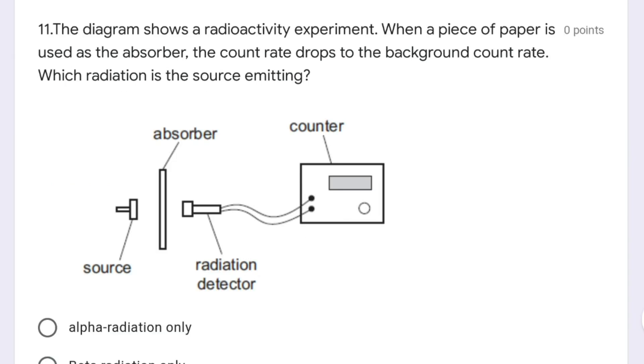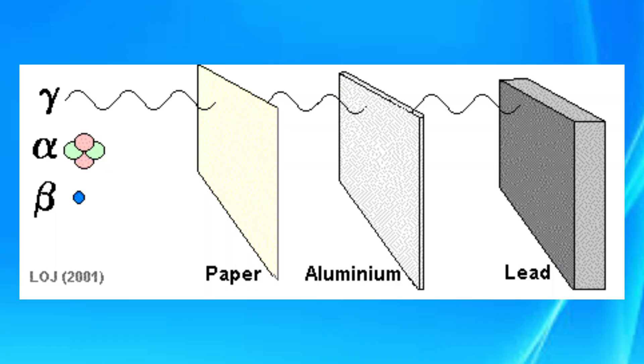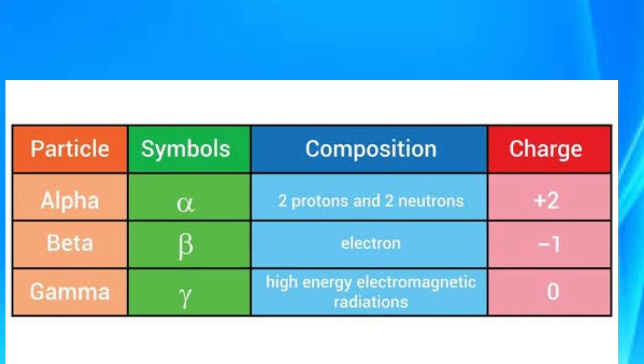This question is related to alpha, beta, and gamma radiation. The diagram shows a radioactive experiment. When a piece of paper is used as the absorber, the count rate drops to the background count rate. Which radiation is the source emitting? This is radiation which can be absorbed by paper itself, so the answer is alpha radiation. When we compare the penetration power of alpha, beta, and gamma, alpha has the least penetration power, beta medium, and gamma the most. Alpha is having least because it has heavy mass, so it can be stopped at a nearby distance, whereas beta is fast-moving massless electrons, but gamma is just a form of energy, photons, so they can penetrate any material.